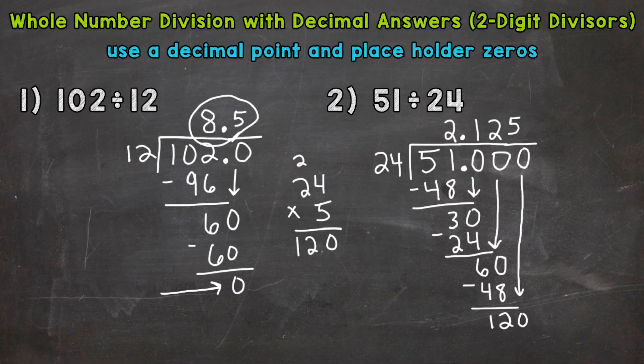So now we multiply. 5 times 24 is 120. I'm running out of room, but I think we can squeeze it in. We get that clean cut zero that we're looking for. So the answer is 2.125.